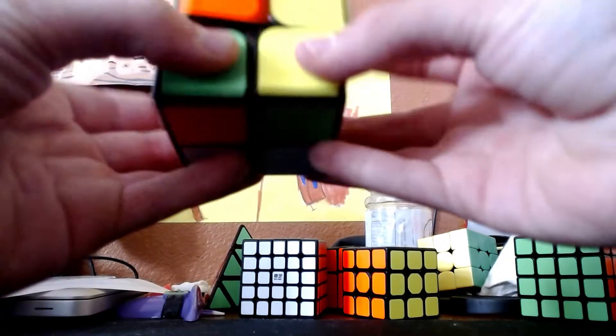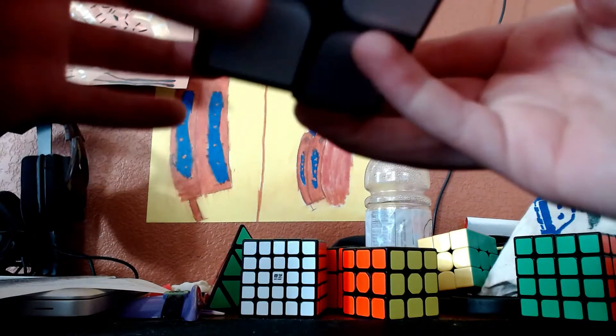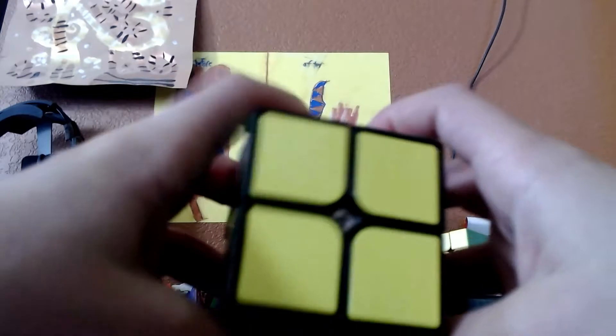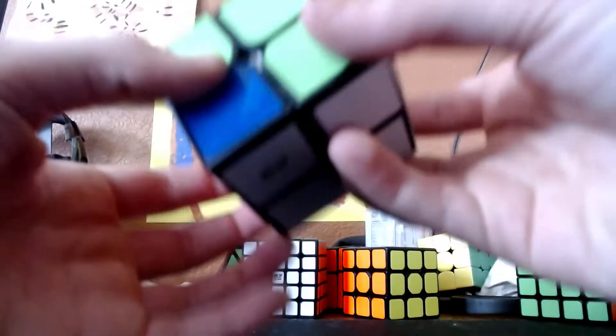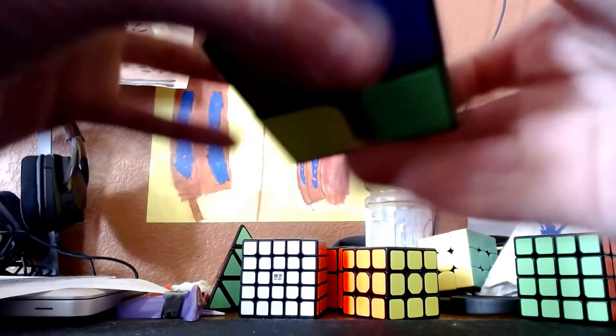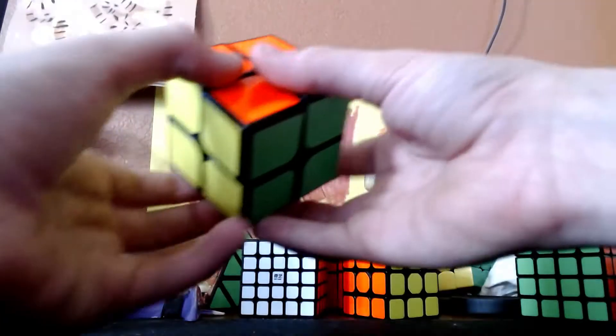Then I use a couple of algorithms to get the top, that's yellow. And then I just solve the rest of the cube just by flipping a lot. Pretty easy.